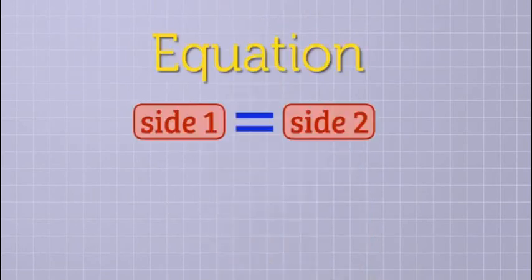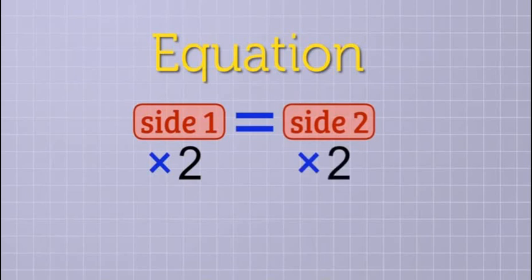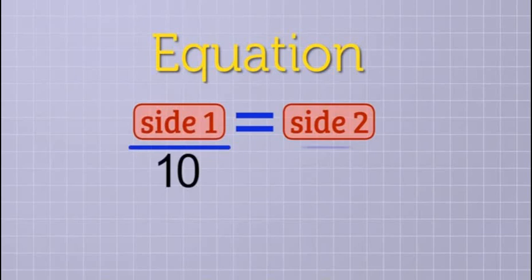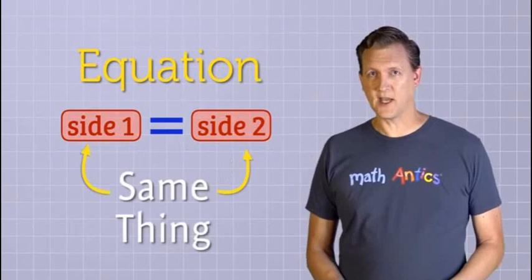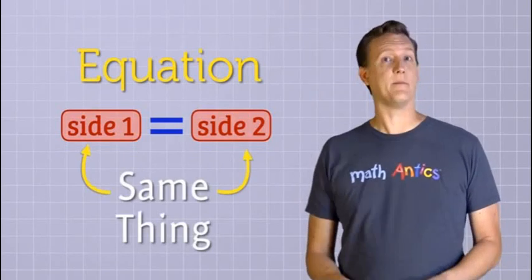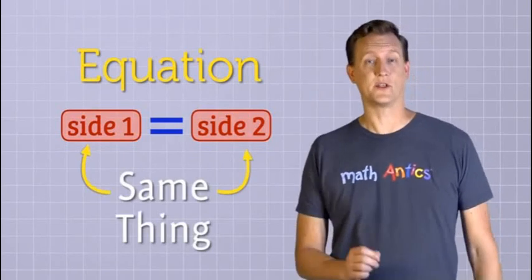And that's the same for multiplication and division. If we want to multiply one side of an equation by a number, then we need to multiply the other side by that same number. Or if we want to divide one side of an equation by a number, then we have to divide the other side by that number also. As long as you always do the same thing to both sides of an equation, it will stay in balance, and your equation will still be true.